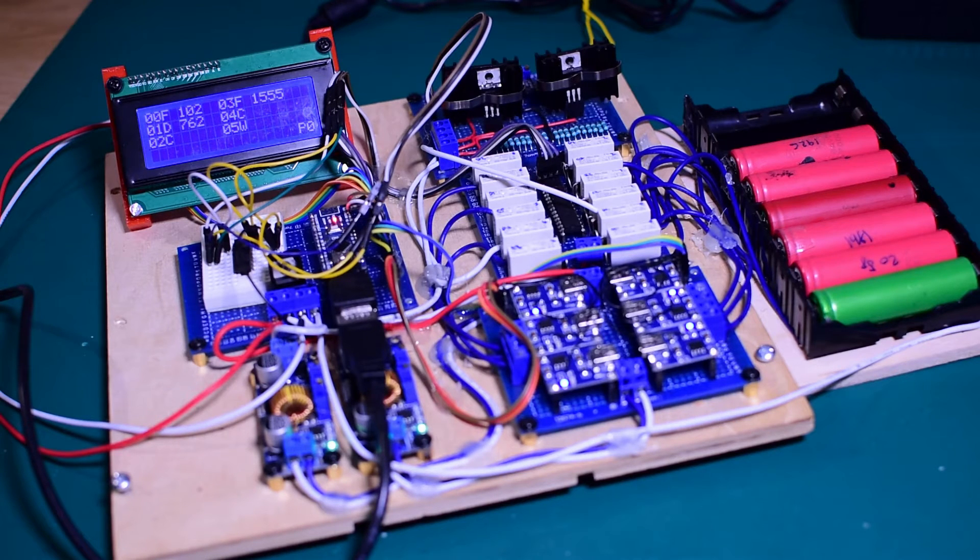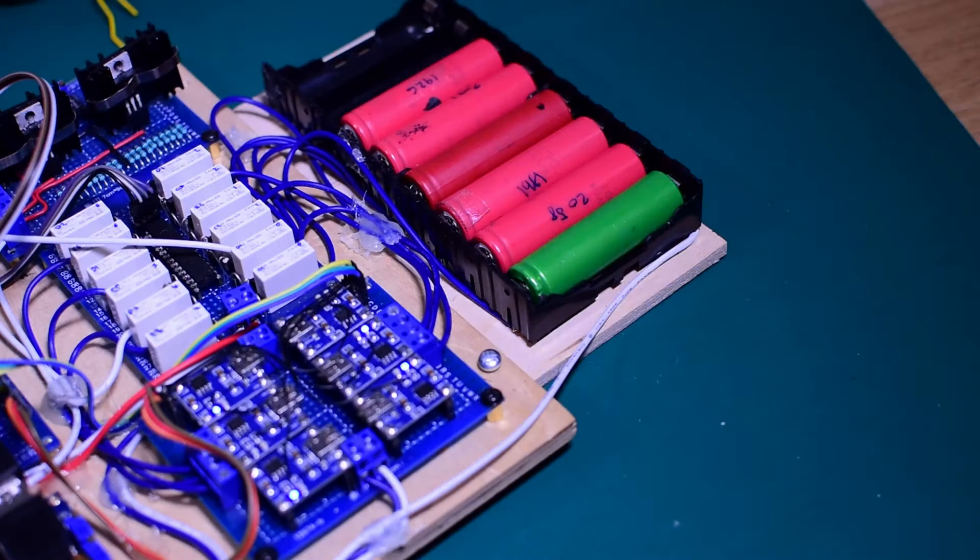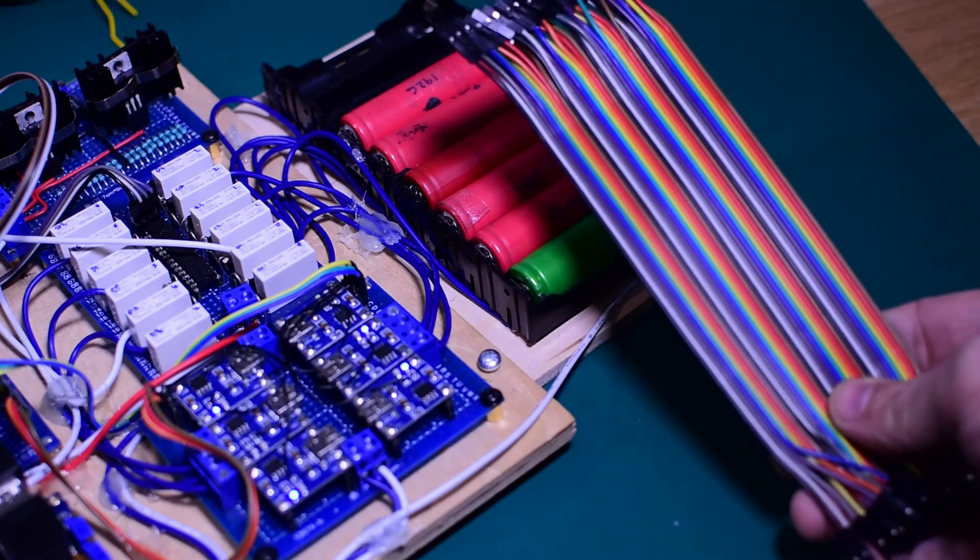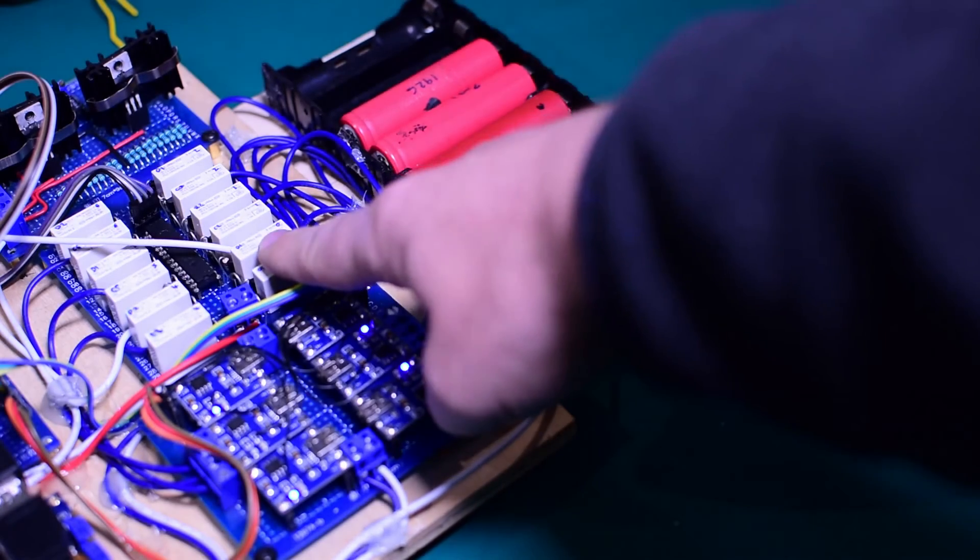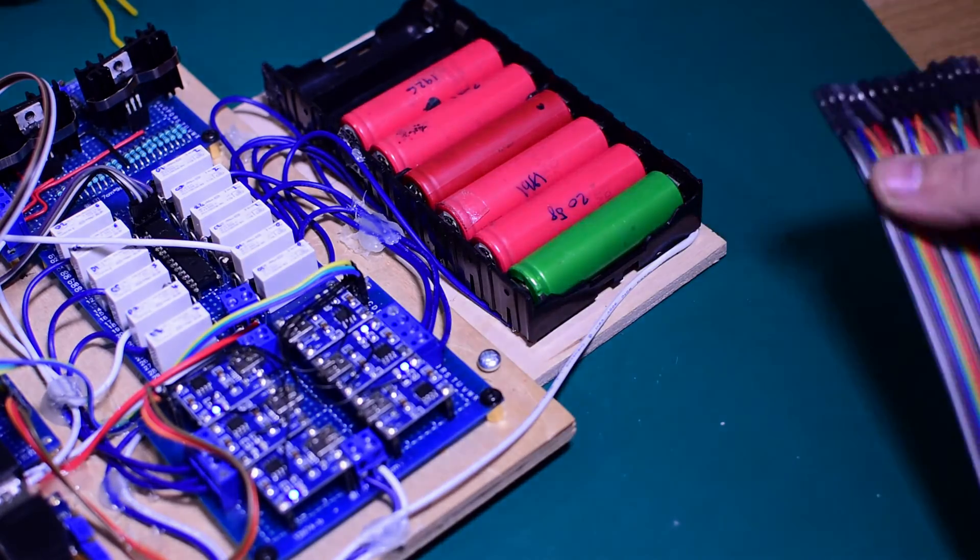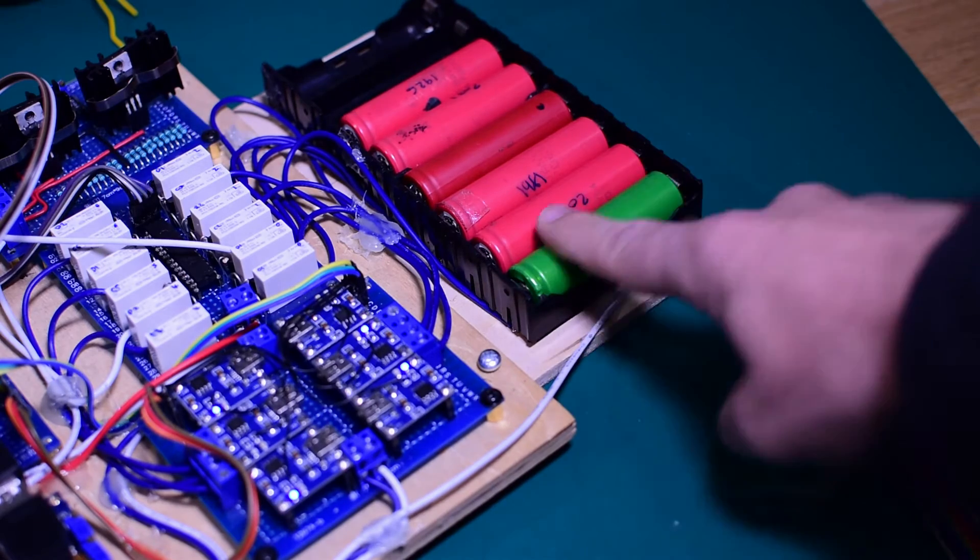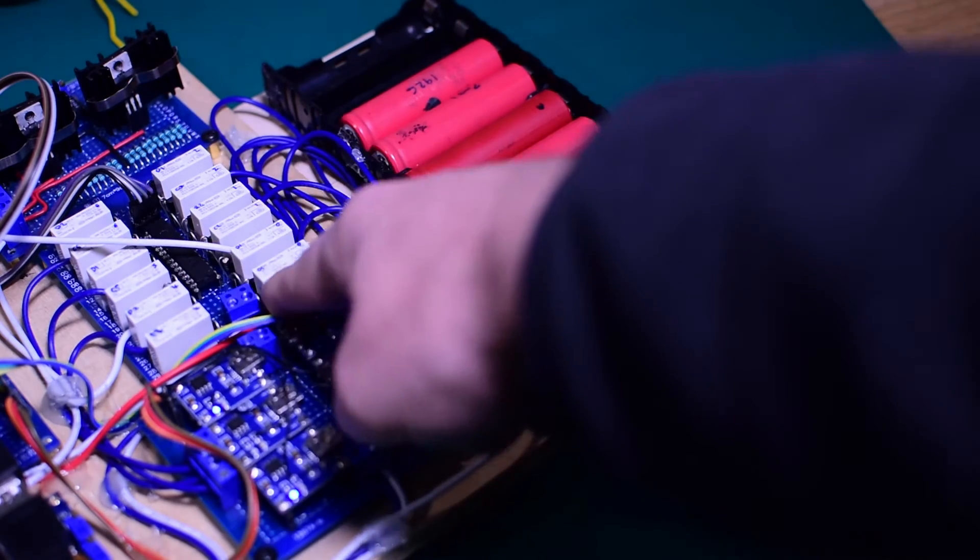One, wire gauge really does matter. Some of the keen-eyed viewers may note a subtle change to these wires over here. Originally I was using some of these jumper cables to connect the batteries to the selector, mainly so I could use the disconnectors to remove this battery holder from the selector board.